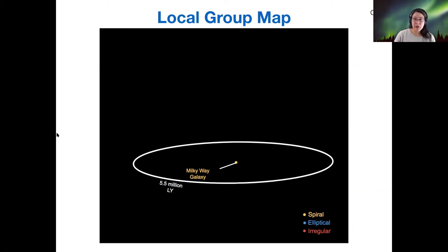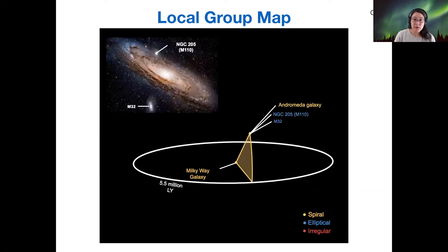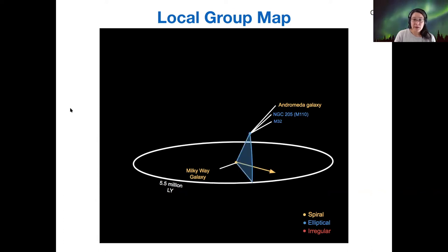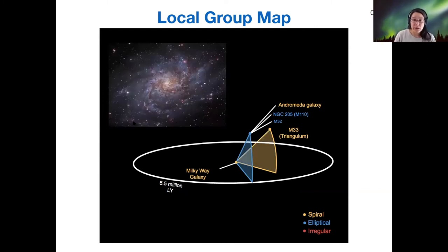If we consider what are the other larger neighbors in this group, we can find the Andromeda galaxy here as well as its two satellites M32 and M110, which are both elliptical. And if we look outward in a similar direction as Andromeda, we find the Triangulum galaxy M33. This is another large spiral but not quite as large as the Milky Way or Andromeda.